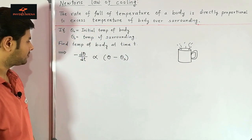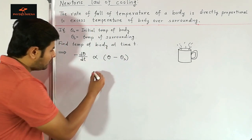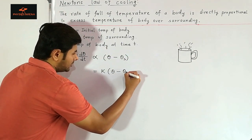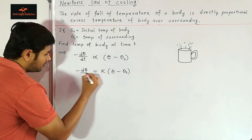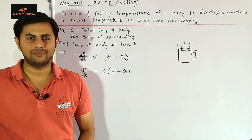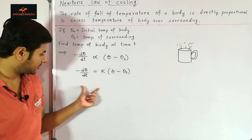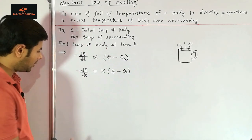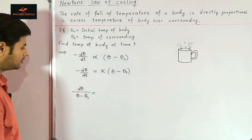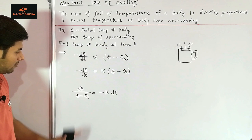Theta is the temperature of the body. We will remove the proportionality sign and introduce a constant k. So we have: minus d theta by dt equals k times (theta minus theta s). This is a simple differential equation which we can solve using the method of separation of variables. Taking terms containing theta to the left and terms containing t to the right.